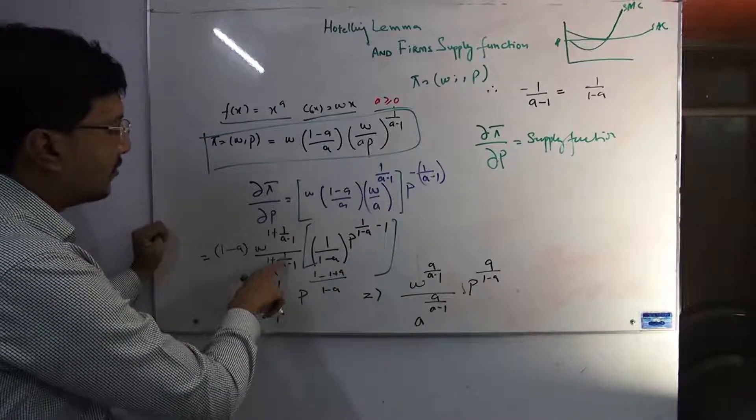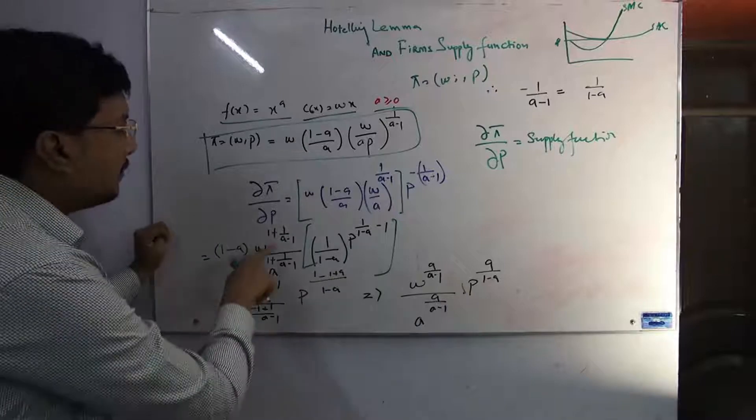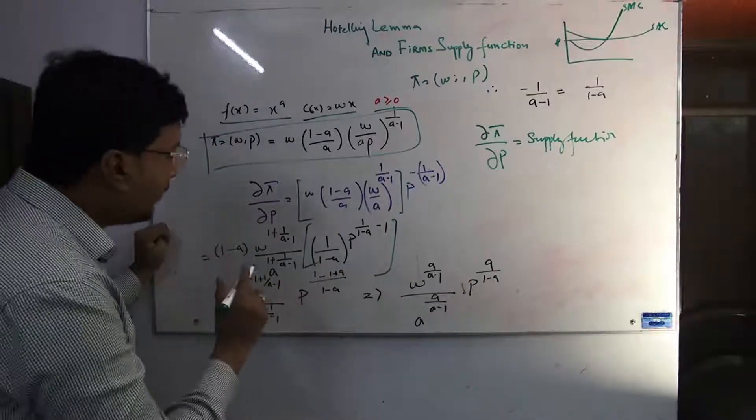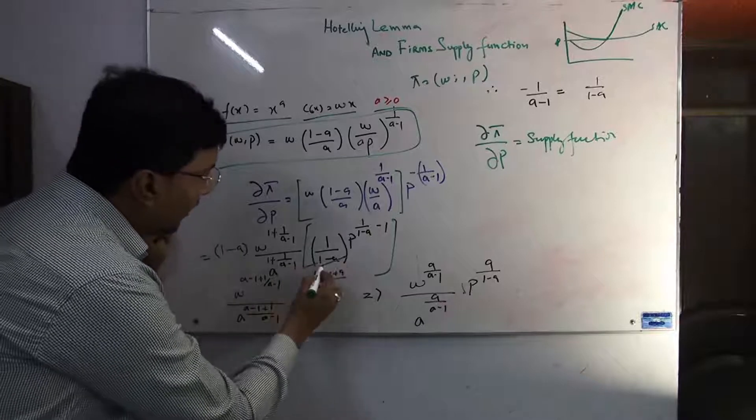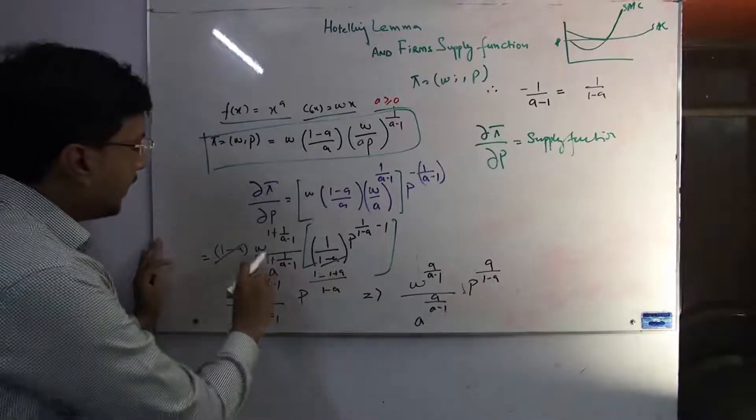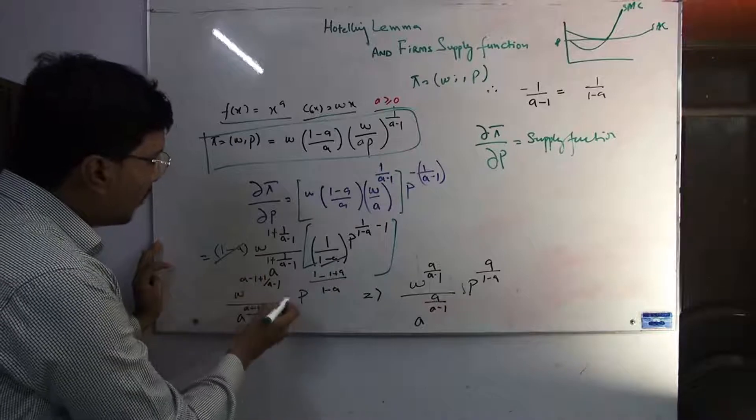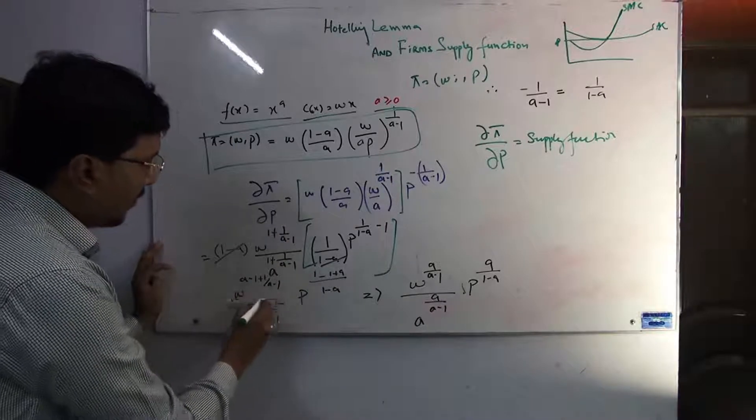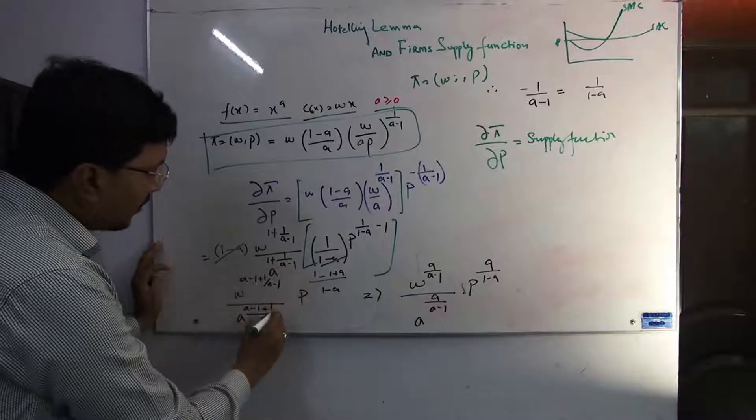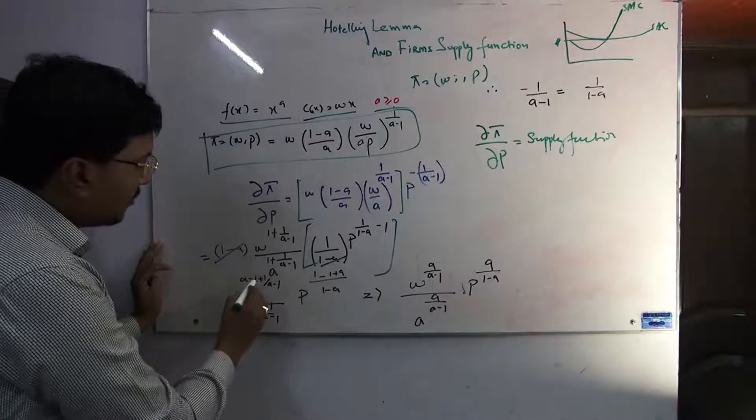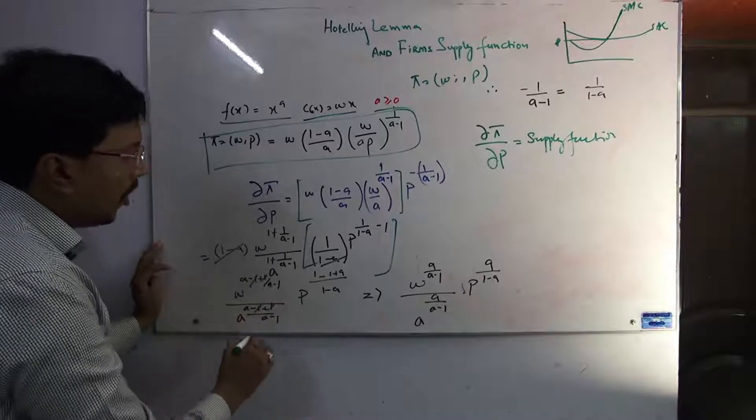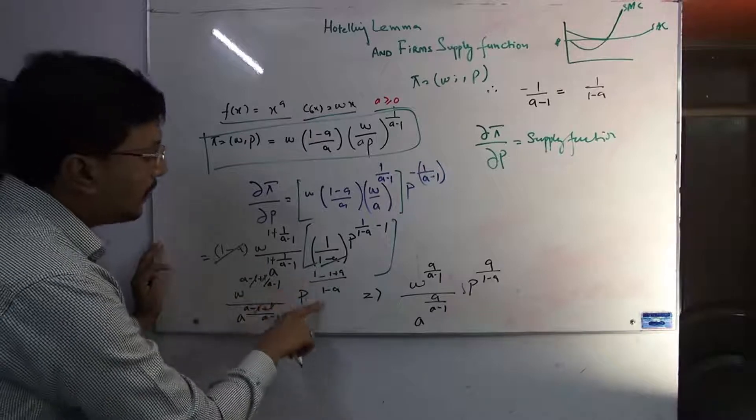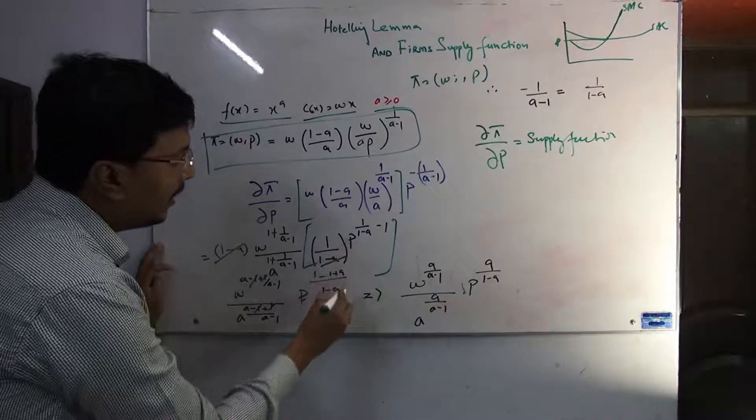We've already taken the derivative. Moving ahead, what happened? (1-a) canceled out with (1-a). When we solved these powers, it became easy: (a-1+1)/(a-1) which is (a-1+1)/(a-1). Simply, this one cuts and you have this whole equation continuing. Further simplifying, when we took common, it became (1-a), and this stayed as is.